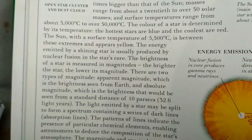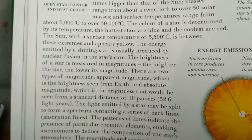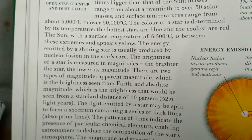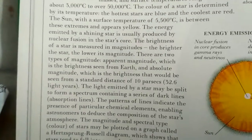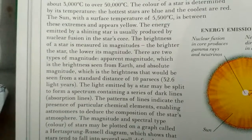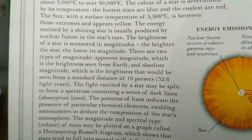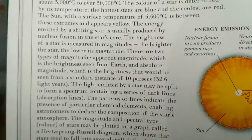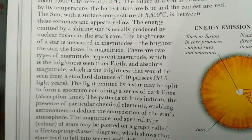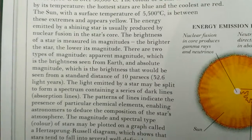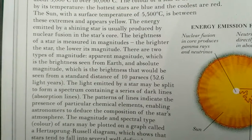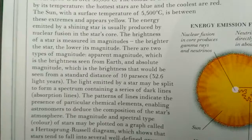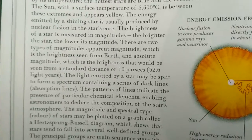The brightness of a star is measured in magnitude. The brighter the star, the lower its magnitude. There are two types of magnitude: apparent magnitude, which is the brightness seen from the Earth, and absolute magnitude, which is the brightness seen from the standard distance of 10 parsecs.